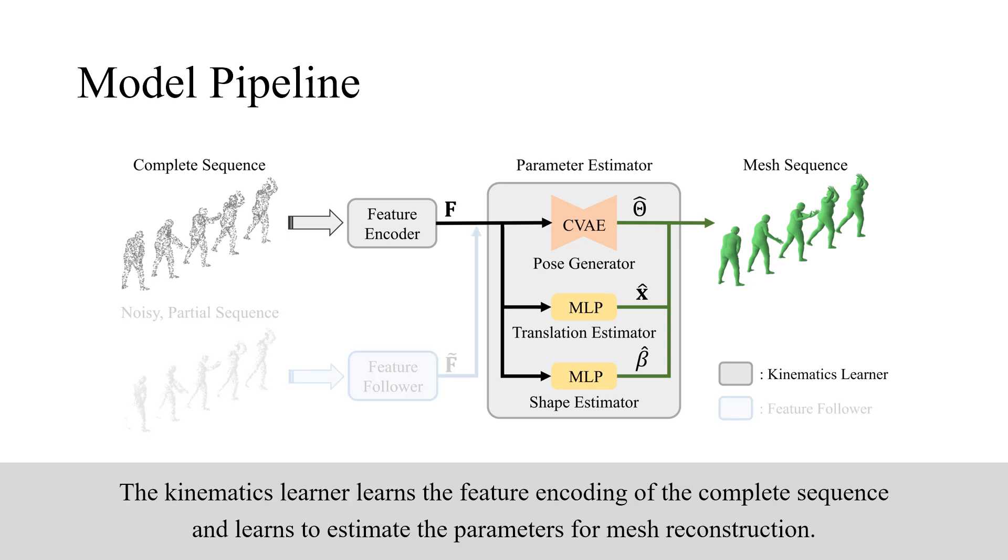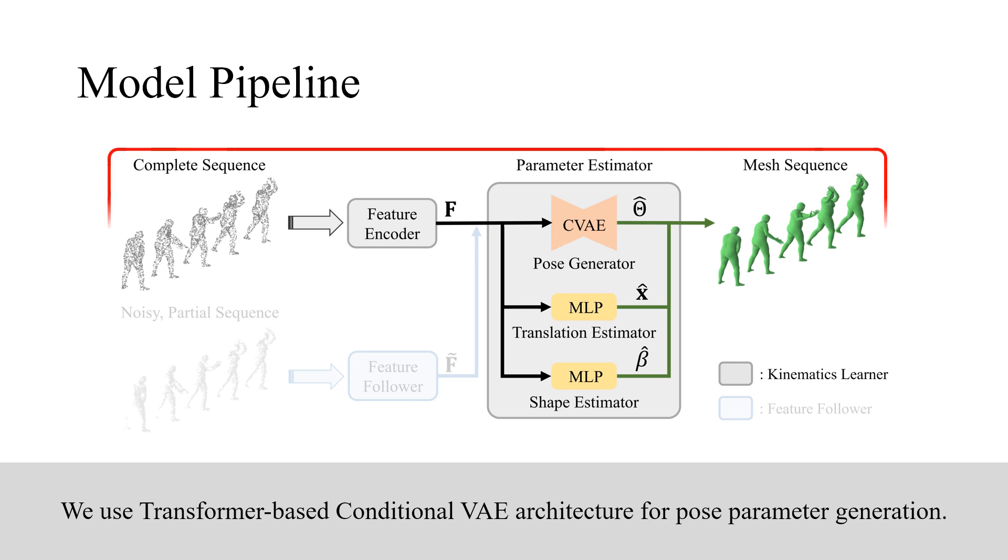The Kinematics Learner learns the feature encoding of the complete sequence and learns to estimate the parameters for mesh reconstruction. We use transformer-based conditional VAE architecture for pose parameter generation.